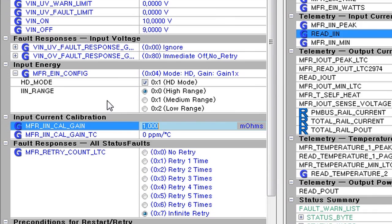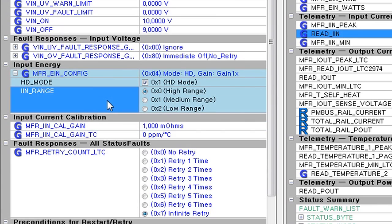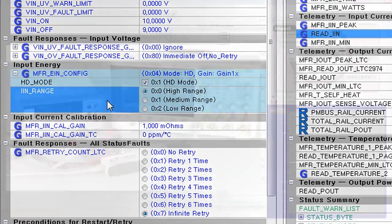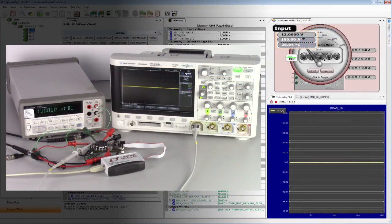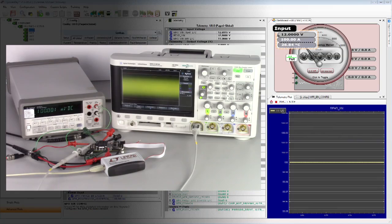Let's set the input sense amplifier to the high range setting to accommodate a 100 millivolt input. As you can see, the LTC2975's input current sense telemetry matches the 100 millivolt DMM reading, both with the common mode noise generator turned off and with the noise turned on.